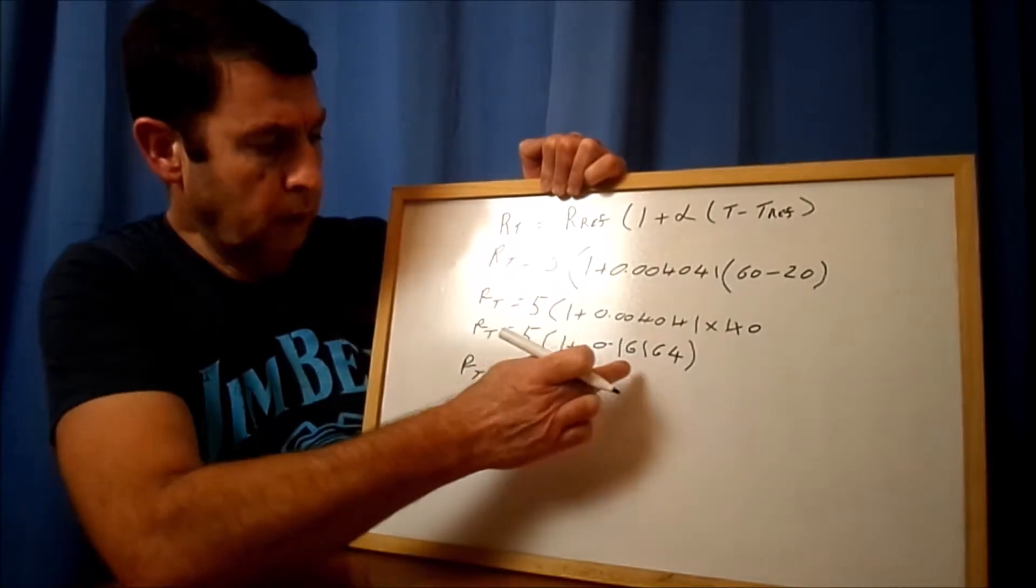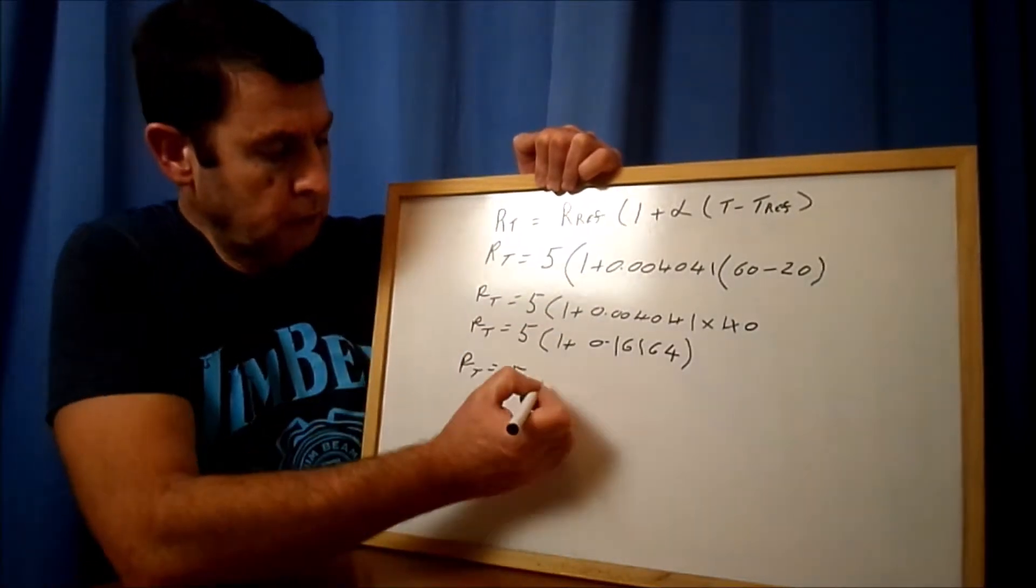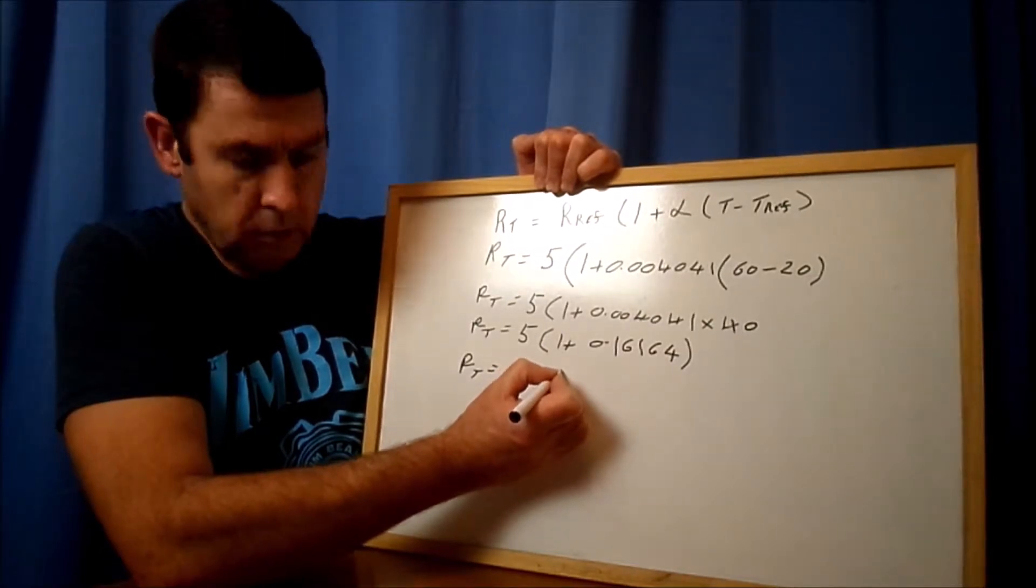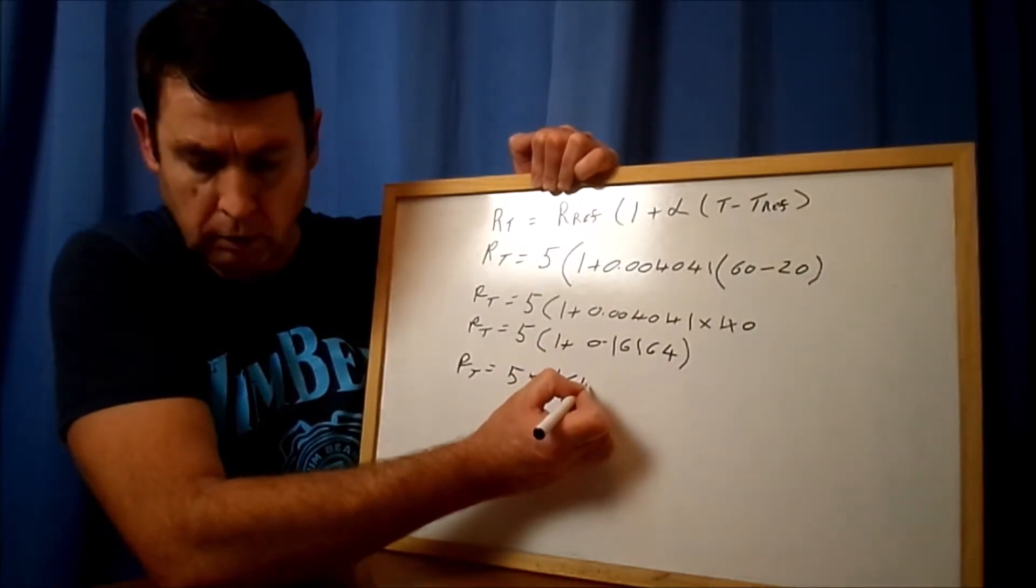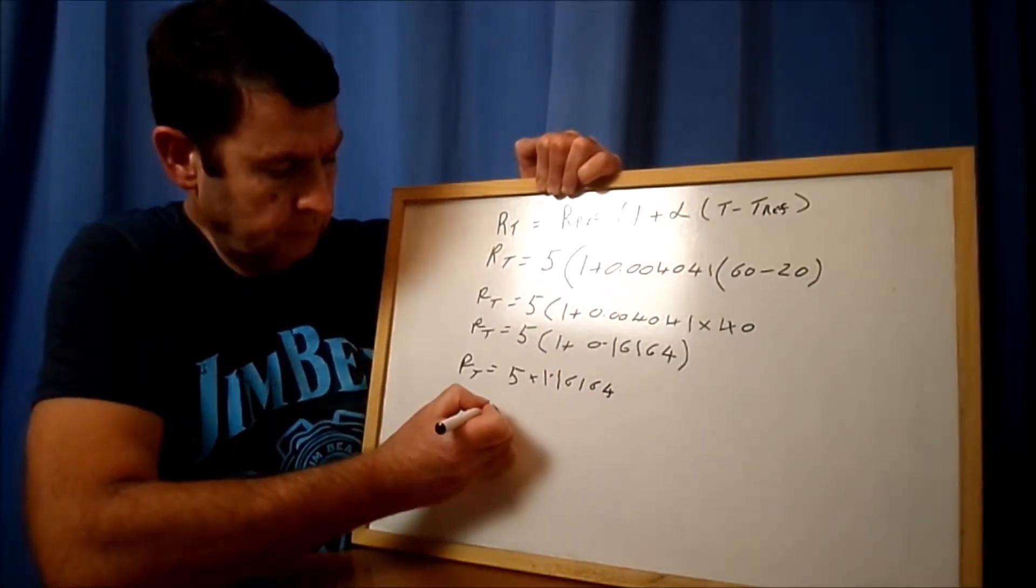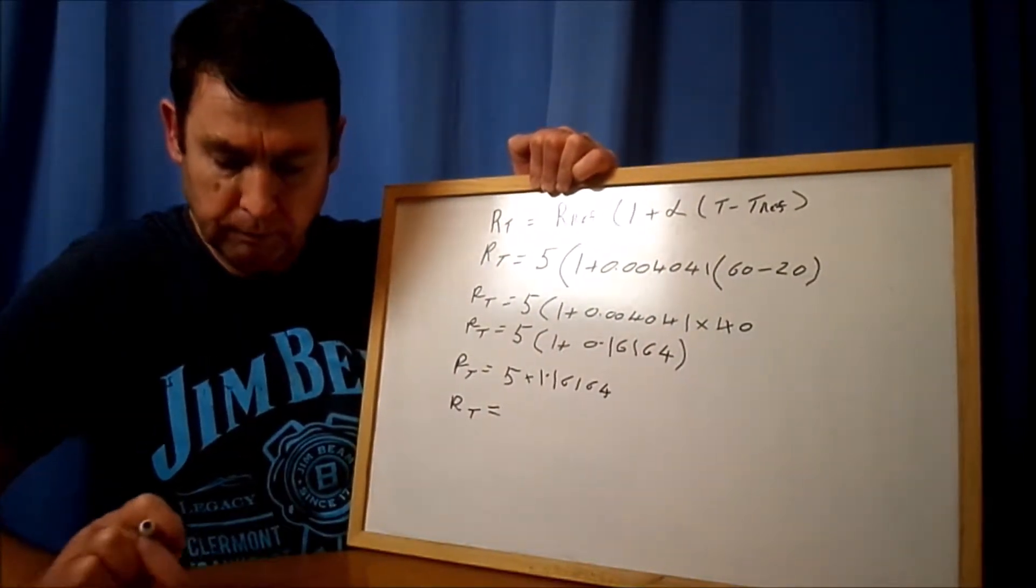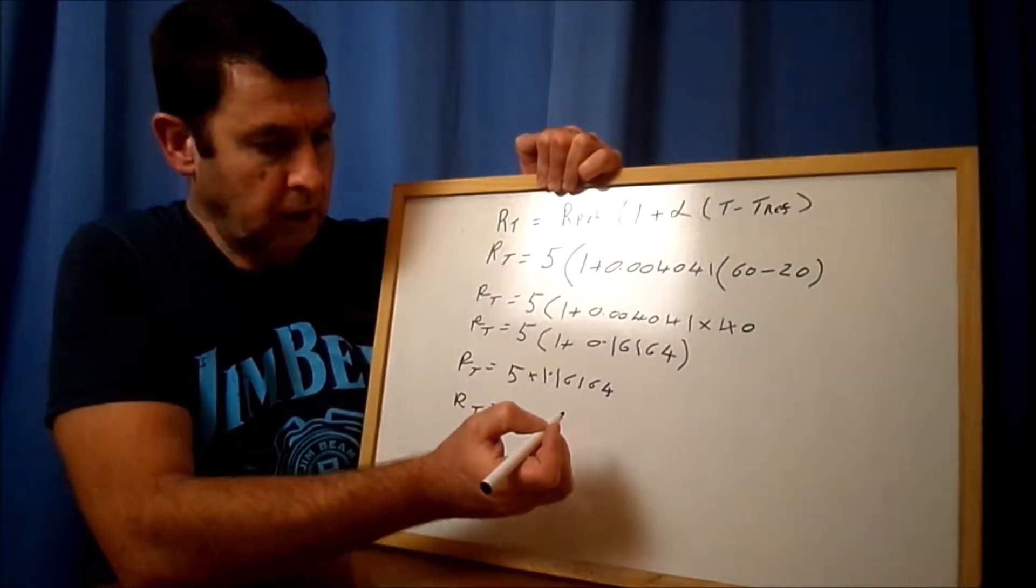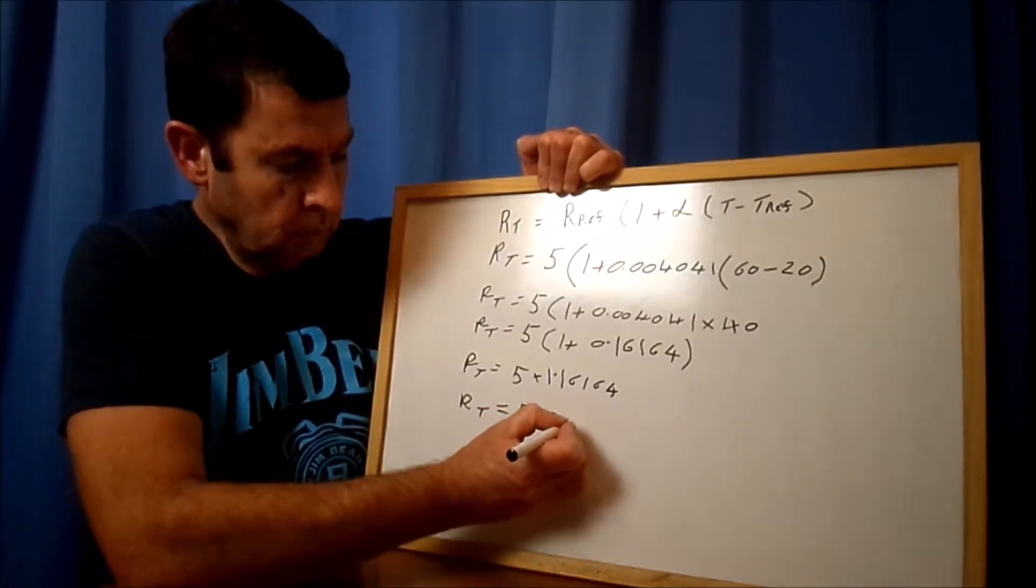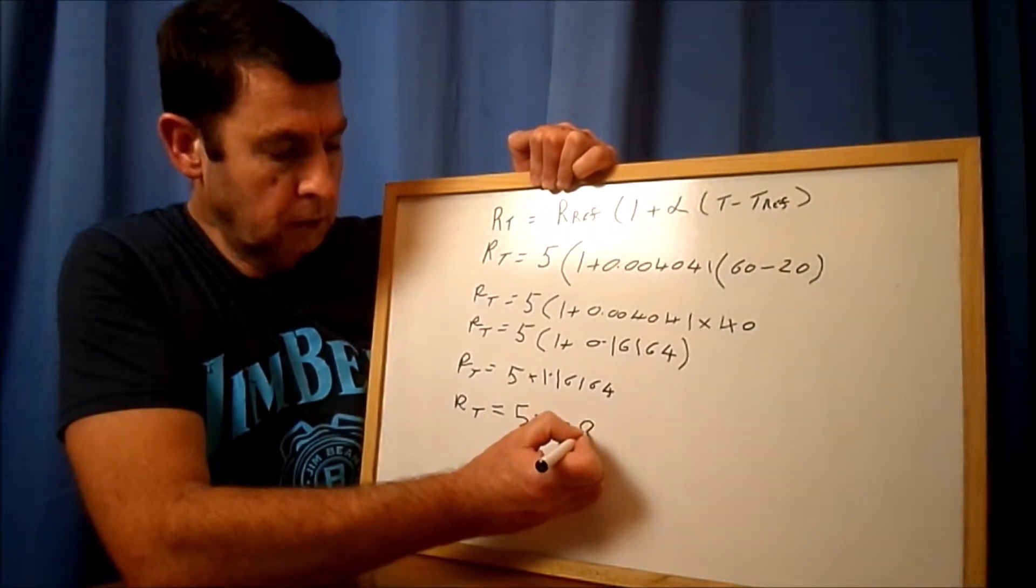Next step: RT is equal to 5, so one plus that answer - we can leave that answer in the calculator and say plus one, and that equals 1.16164. So now we can say RT is going to equal 5 times 1.16164, which equals 5.80 ohms. It's a resistance, so the answer is going to be in ohms.